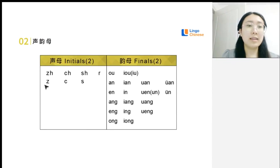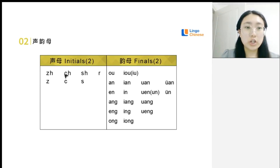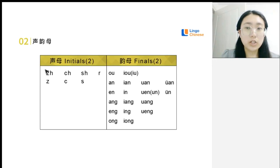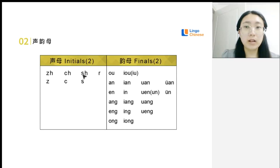Let's look at the initials first. To speak the initial 'zh', it's like the beginning of the English word 'jeep'. The initial 'ch' is like the beginning of the English word 'cheese', and 'sh' is like the beginning of the English word 'sheep'.